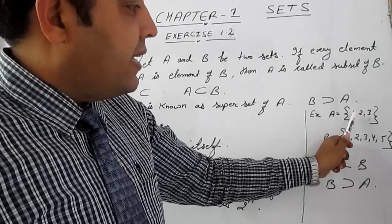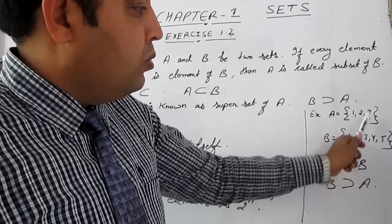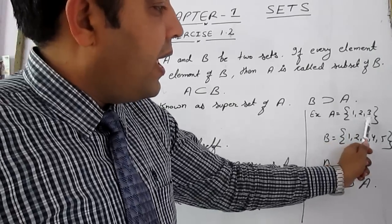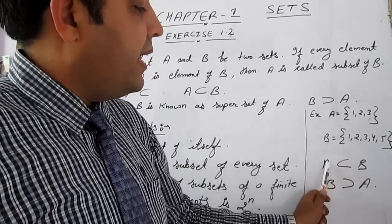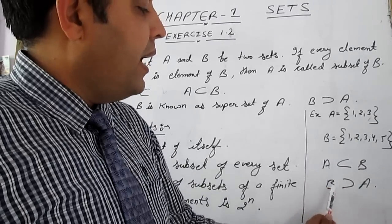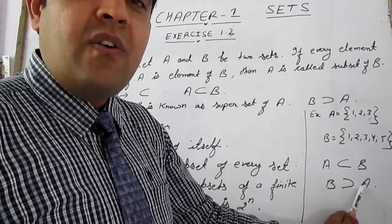We can clearly see that 1, 2, 3, means all elements of set A are present in set B. Then A is subset of B, and B is superset of A.